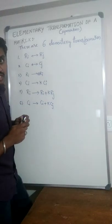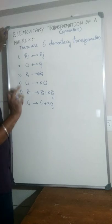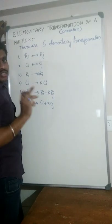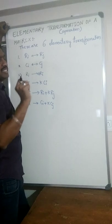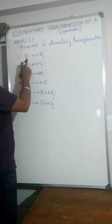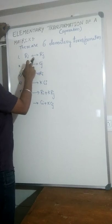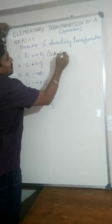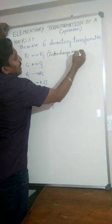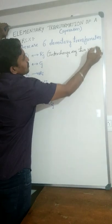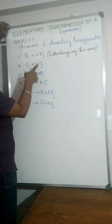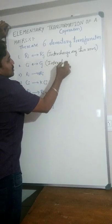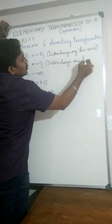Good morning students. Today we are going to discuss one important topic on matrices: elementary transformation of the matrix, or elementary operation of a matrix. In elementary operations, there are six total. The first one is Ri interchanging Rj — the symbol means interchange any two rows. And Ci interchange Cj means interchange any two columns.